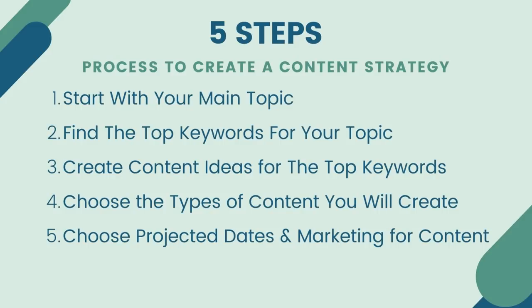Here are the five steps that I follow: start with a main topic, find the top keywords for your topic, create content ideas for the top keywords, choose the types of content that you will create, and then choose projected dates that you plan on publishing your content and how you plan on marketing your content. Obviously, step six would be to start creating your content, but you really want to start with some different ideas and keywords to make sure you're reaching people who are actively searching in Google, YouTube, or wherever you want to reach people.